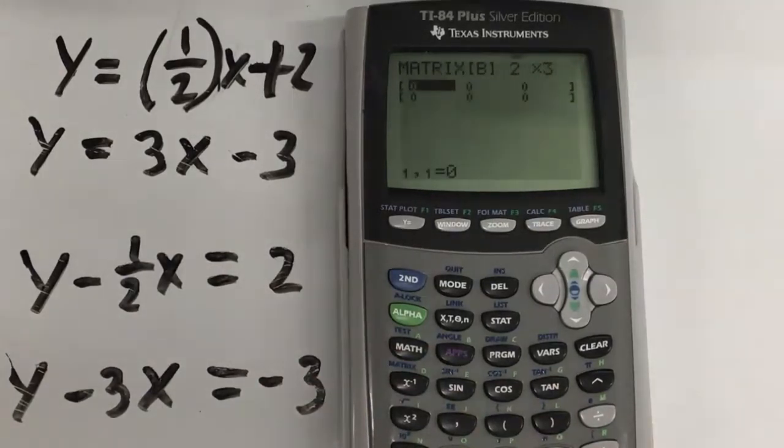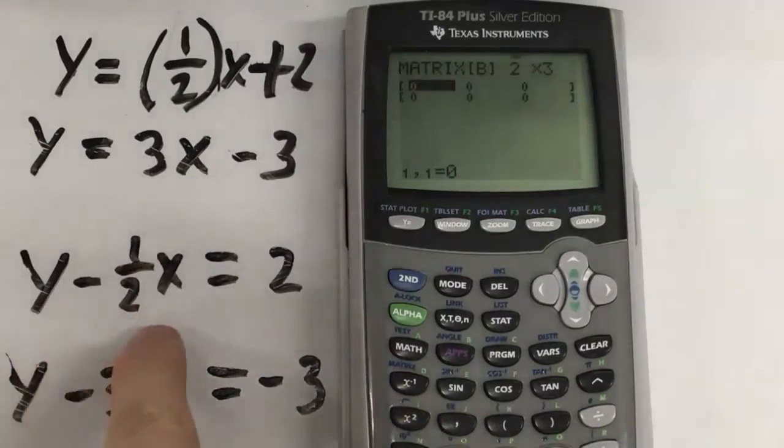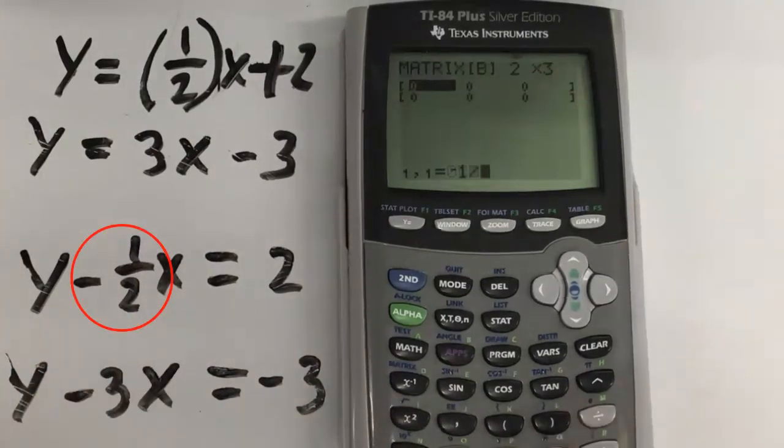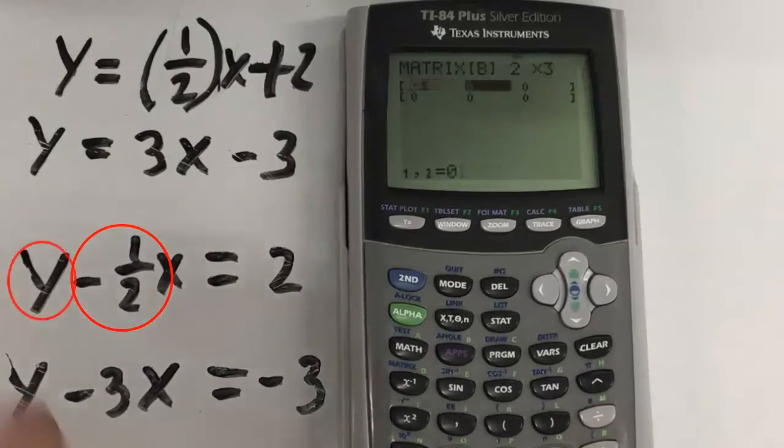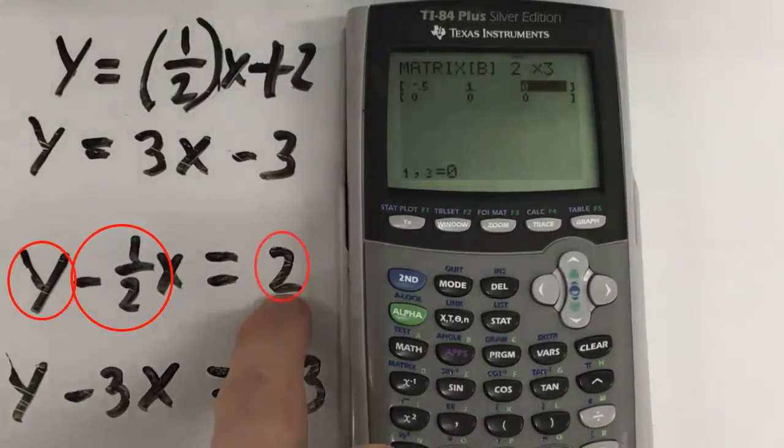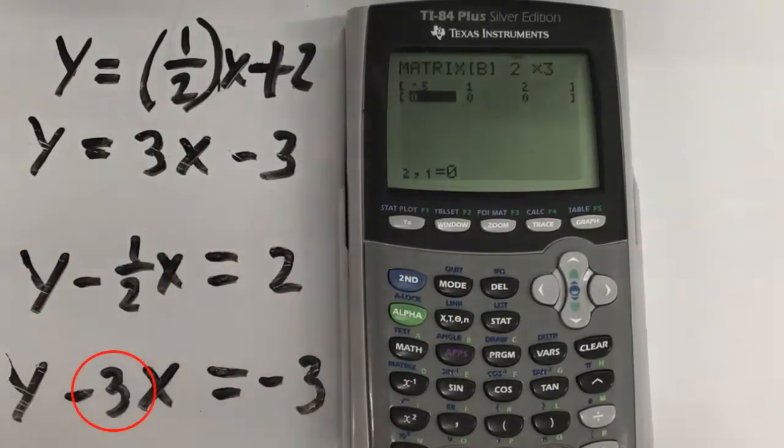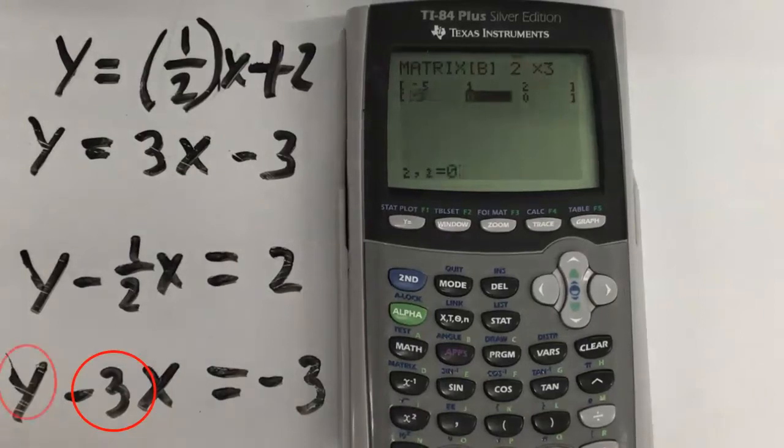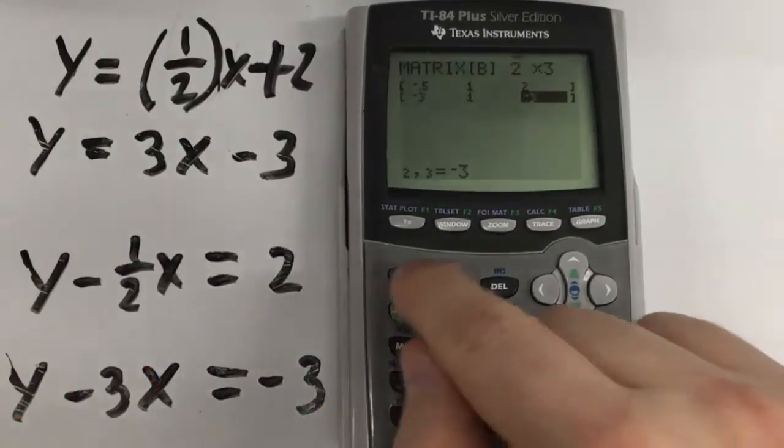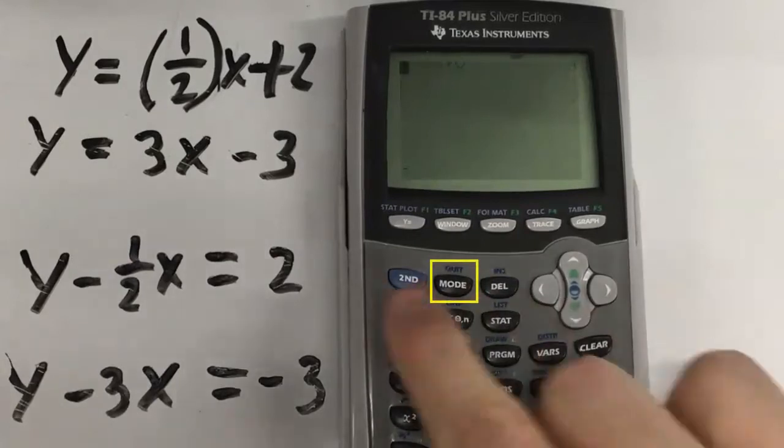And just for convention purposes, I'm going to do the X's first. So, negative 1 half. Y is at positive 1. And it equals 2. Negative 3. The positive 1. And negative 3. So, now, back to the main screen, which is the second mode.